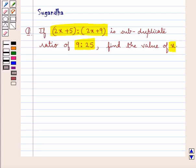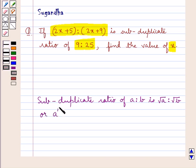Before we move on to the solution, let's see what is the subduplicate ratio. Given a ratio A:B, the subduplicate ratio of A:B is √A : √B, or A^(1/2) : B^(1/2). This is the key idea that we use for this question.